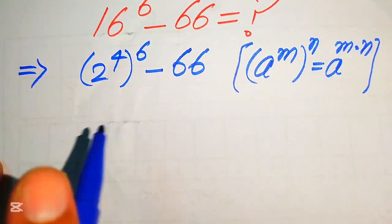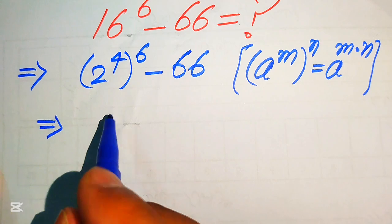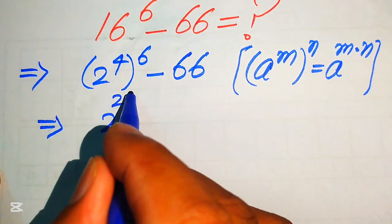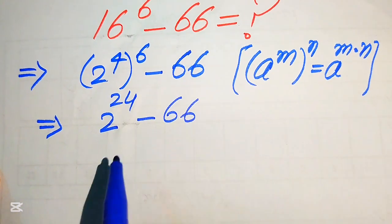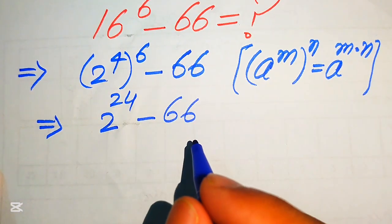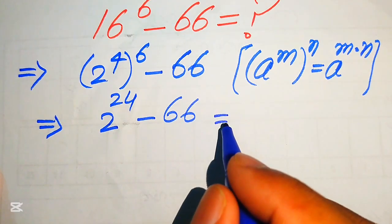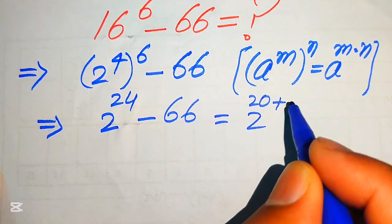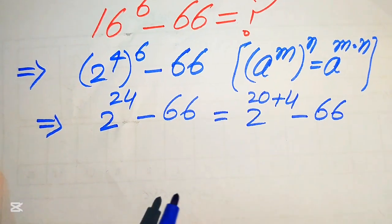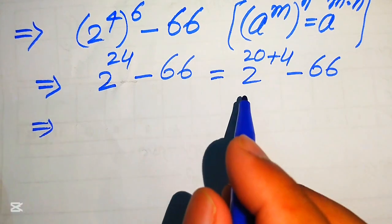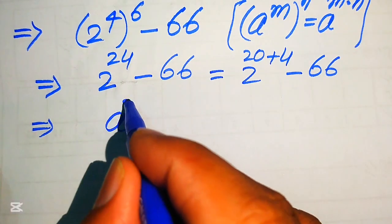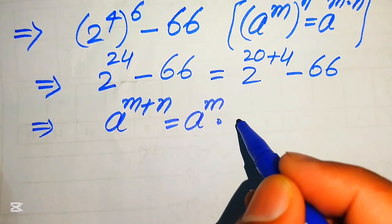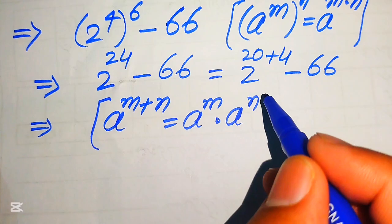Applying this exponent law, the expression is written as 2 to the power of 4 times 6, which becomes 2 to the power of 24, minus 66. We then break 24 as 20 plus 4, giving us 2 to the power of 20 plus 4, minus 66. We apply another exponent law: a to the power of m plus n equals a to the power of m multiplied by a to the power of n.